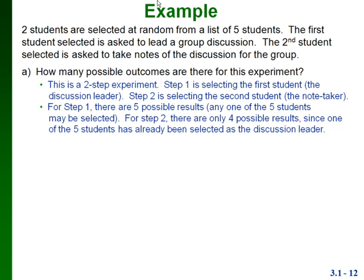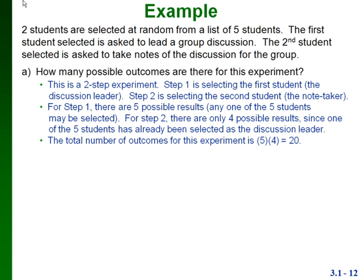For step one, since we had five students, there are five possible outcomes — any one of the five students. For step two, since we've already selected one student, we're not going to select that student again, so we only have four students left to choose from — four possible outcomes. To get the total number of outcomes for the experiment, we multiply those two results: five times four gives us 20.